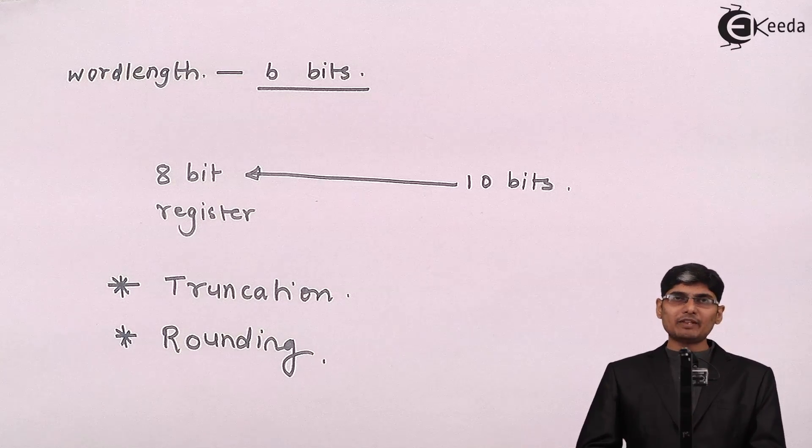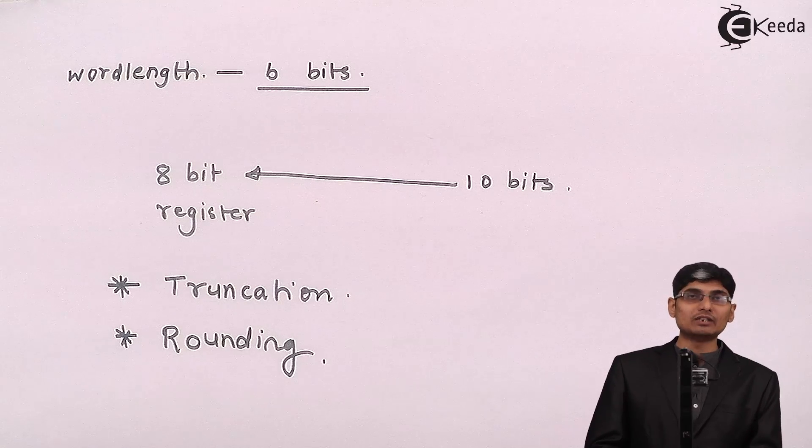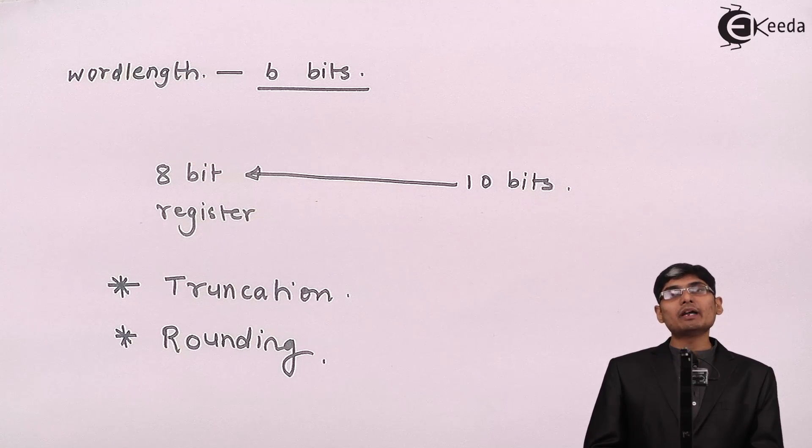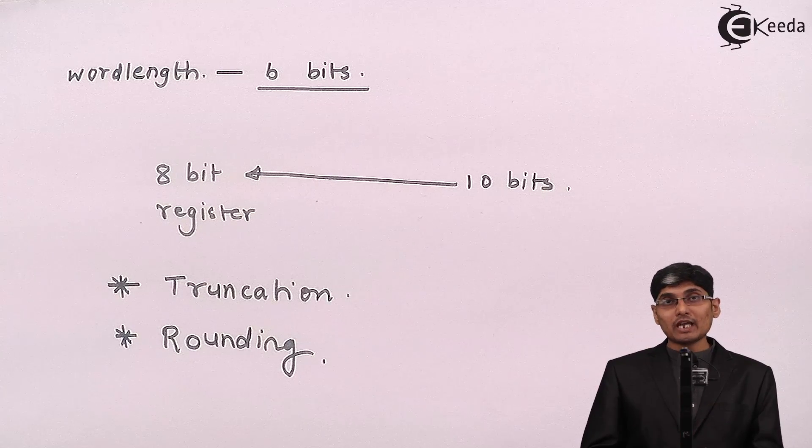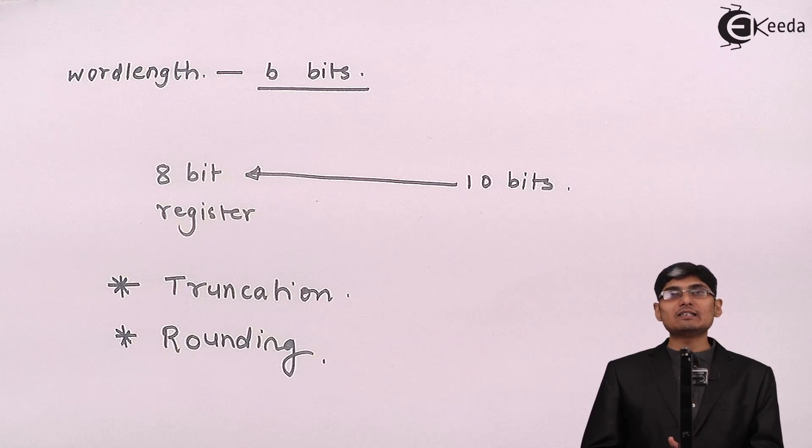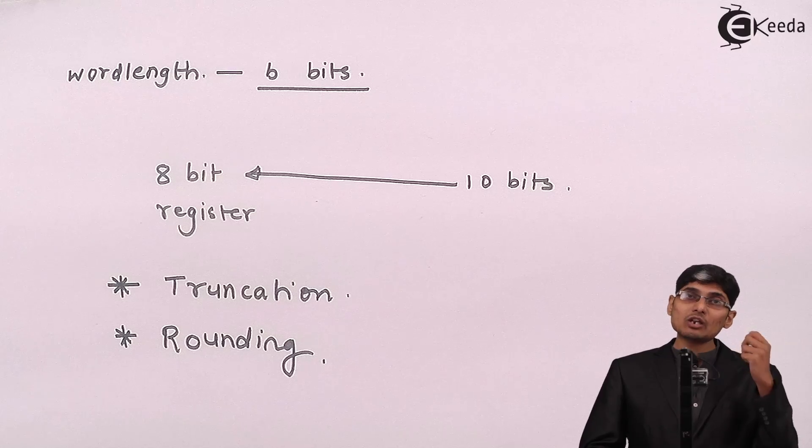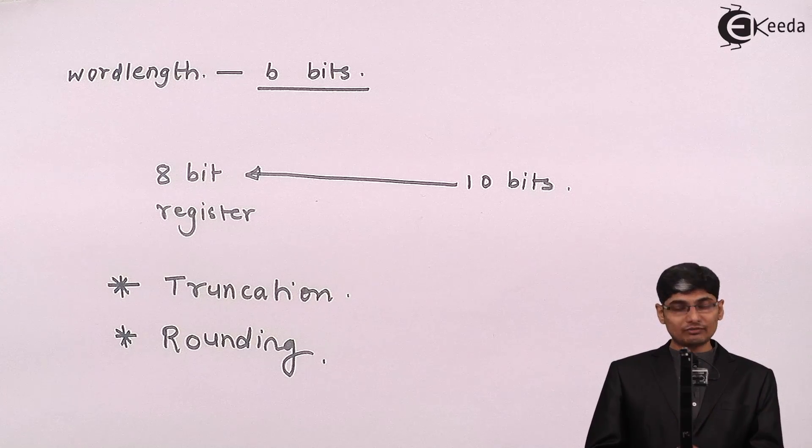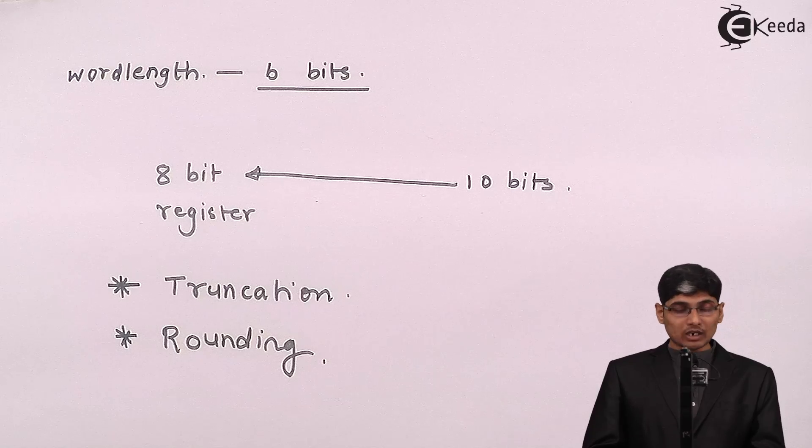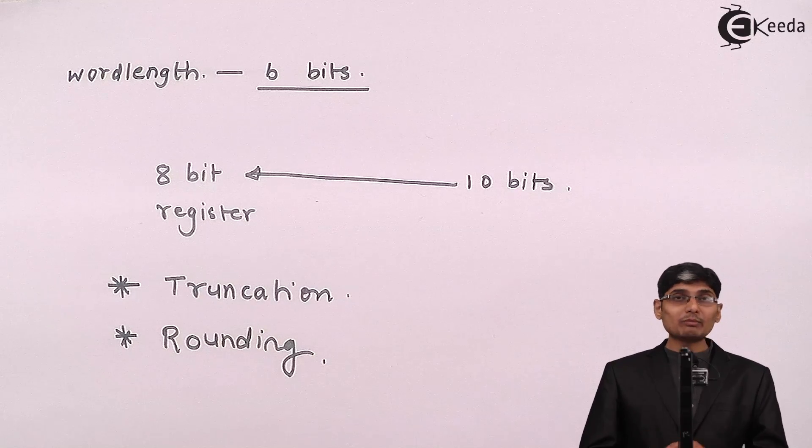It might happen that I have designed a low pass filter, but due to rounding and truncating, my low pass filter started acting like a band pass filter and it is no more passing the DC and it stopped my DC. So these are the major effects of truncating and rounding. Now what you mean by truncation and what do you mean by rounding?